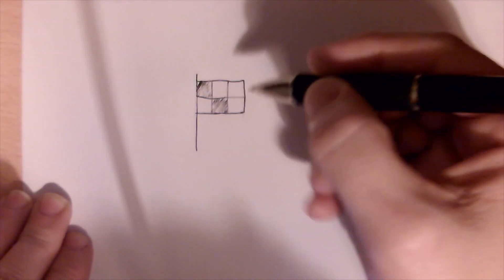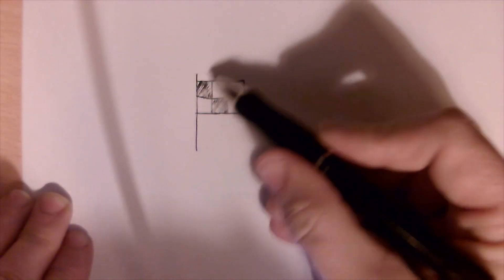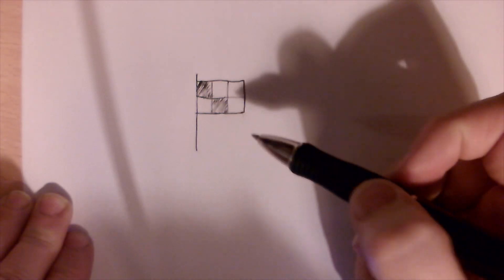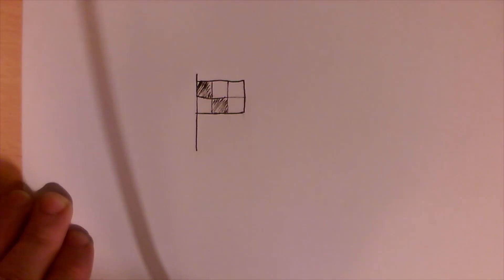So I shaded in two squares which do not share an edge. How many different ways could I have done it? Only shading in two squares but they are not allowed to share an edge. So you'll need to press pause and have a go.